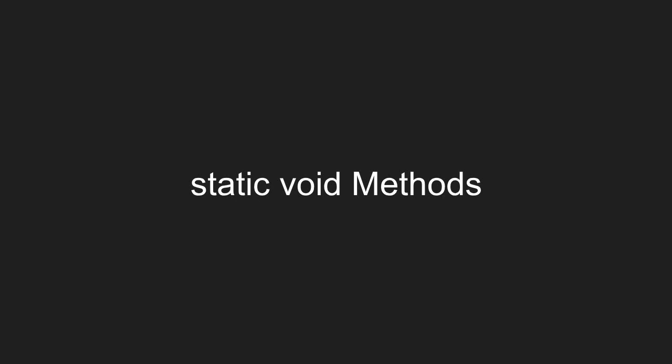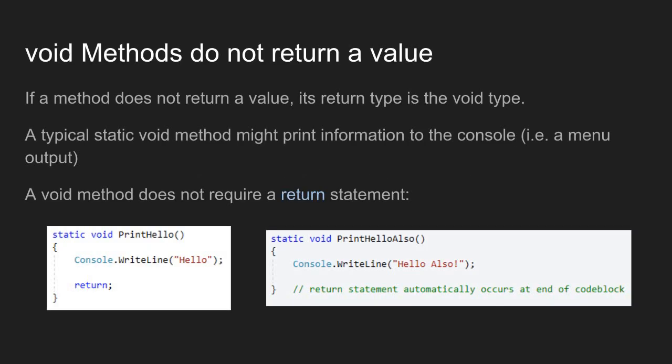In this video, we will work through some examples of static void methods in C#. Void methods do not return a value. So even though the method does not return a value, we still need to declare a return type for the method, as the syntax requires a return type to be defined. A typical static void method might do work such as printing information to the console, like printing a menu, printing a message, or printing an error.